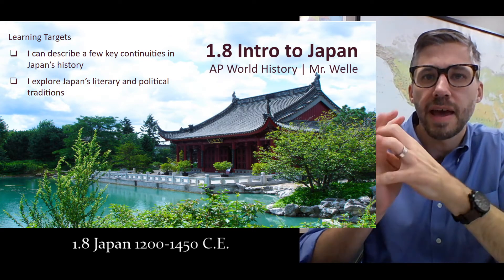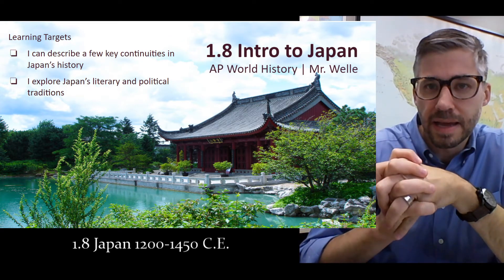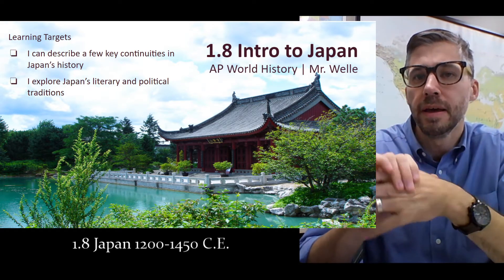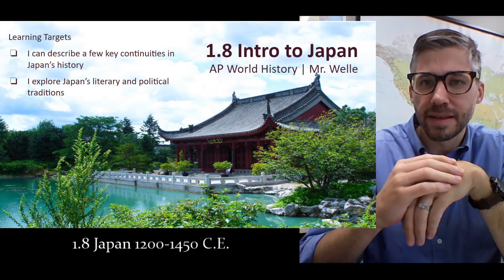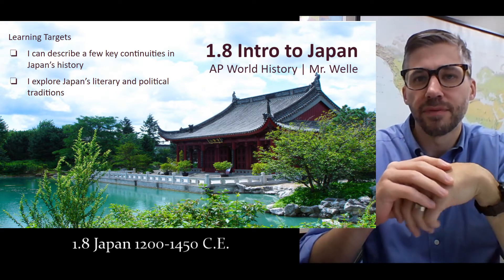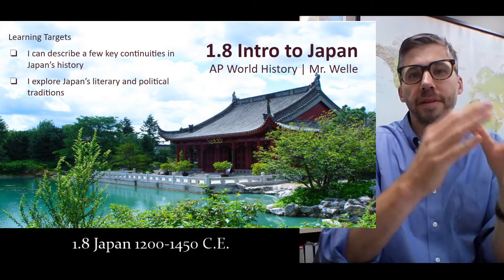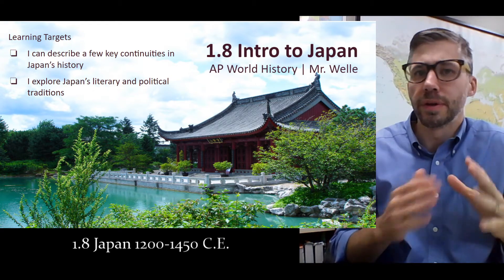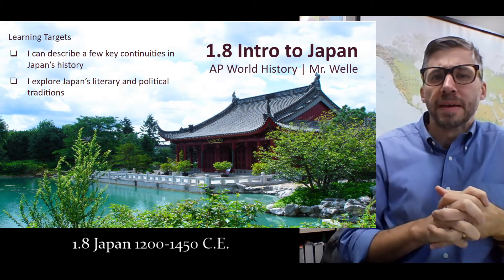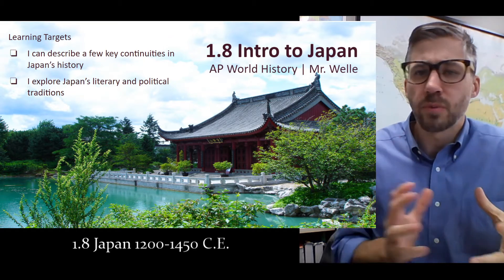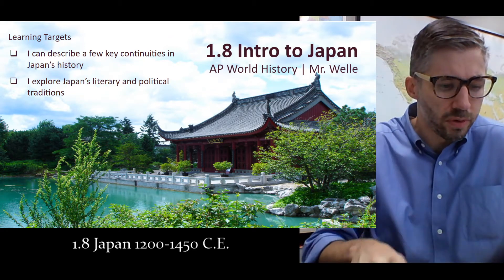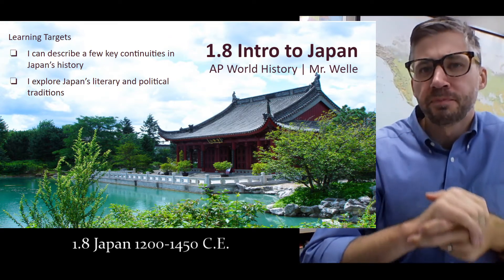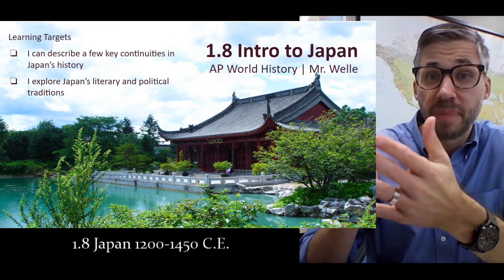Hello, AP World History students. Happy Monday. Welcome to our eLearning lesson for today. This lesson marks the end of our unit one, which is that global snapshots tour — looking around the world at roughly the year 1200 and seeing what we see in all these different places. And this lesson brings us to Japan, a place we haven't been to before.